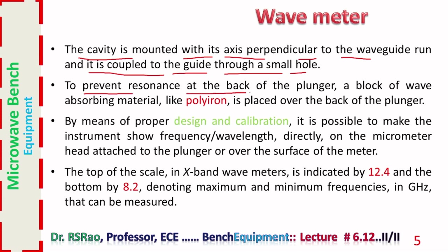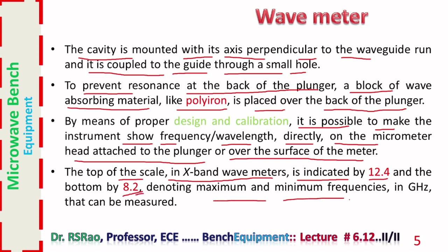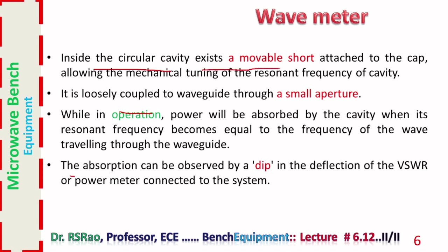To prevent resonance at the back of the plunger, a block of wave absorbing material like polyiron is placed over the back of the plunger. By means of proper design and calibration, it is possible to make the instrument show frequency or wavelength directly on the micrometer head attached to the plunger or over the surface of the meter. The top of the scale in X-band wave meters is indicated by 12.4 and the bottom by 8.2, denoting maximum and minimum frequencies in gigahertz.